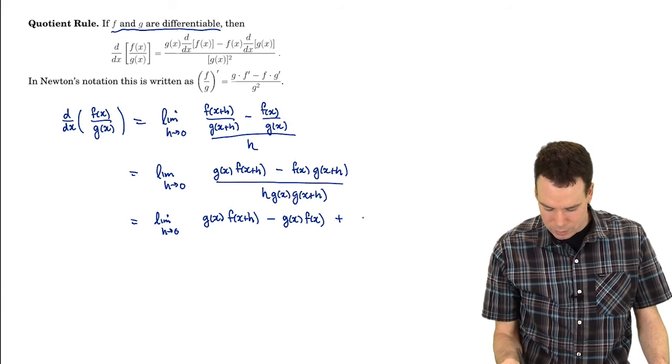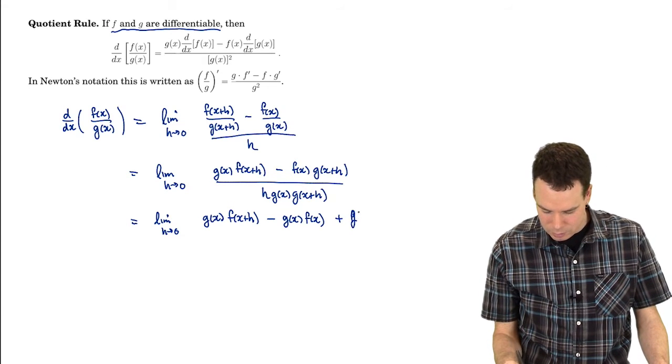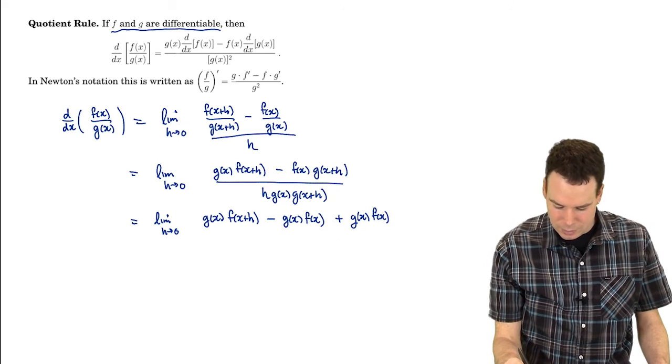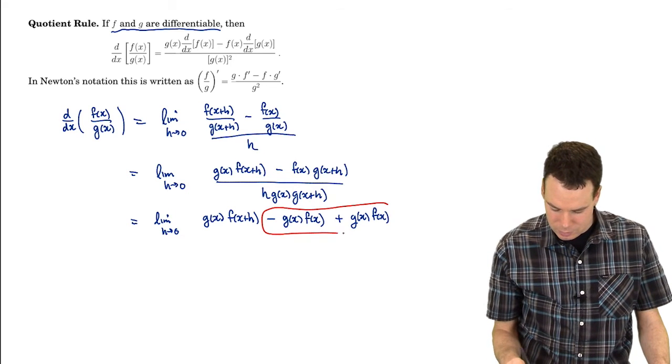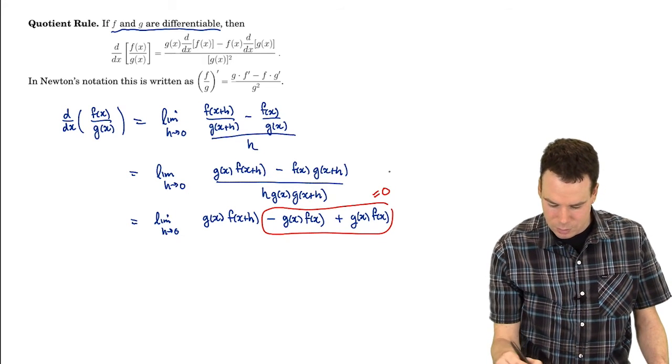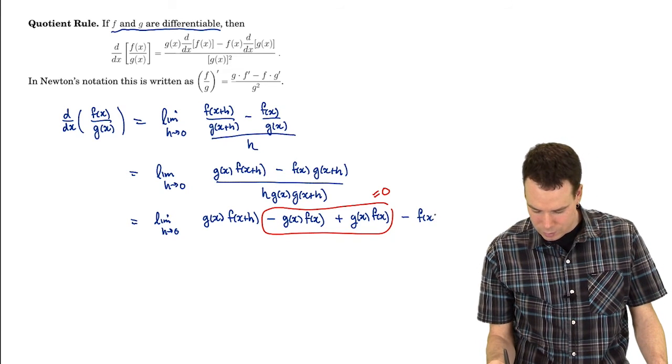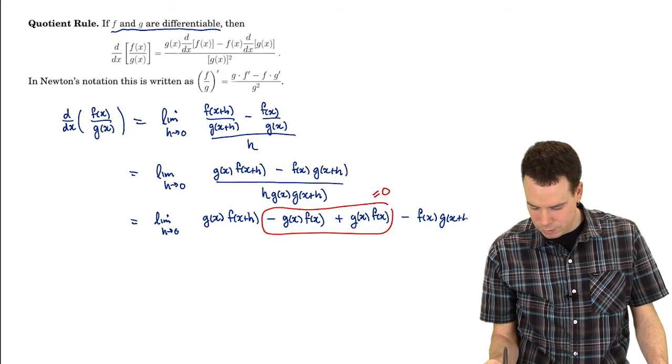Now if I subtract that off then I'm going to have to add it back in. So g of x and f of x I add it back in there. So what I've essentially done is add 0 in to this expression in a strategic way. And then I've got the minus f of x g of x plus h that's still hanging on on the end.